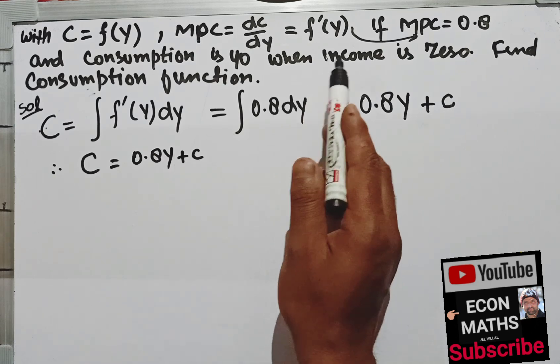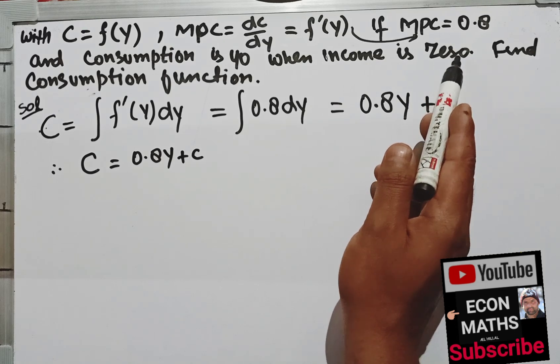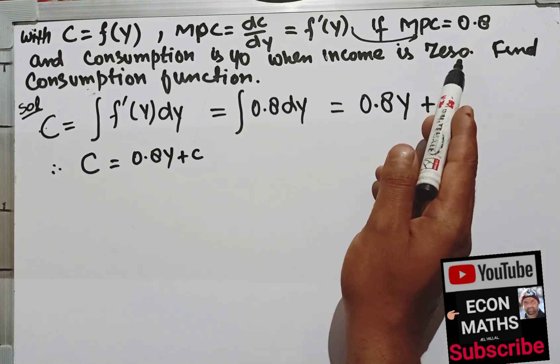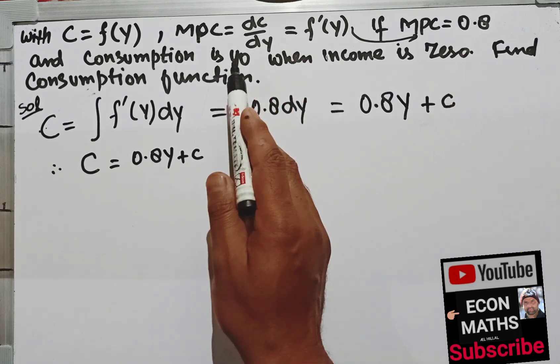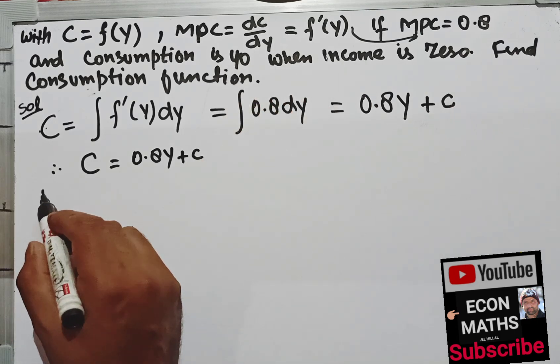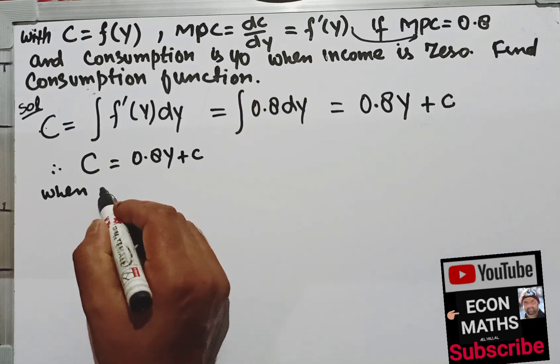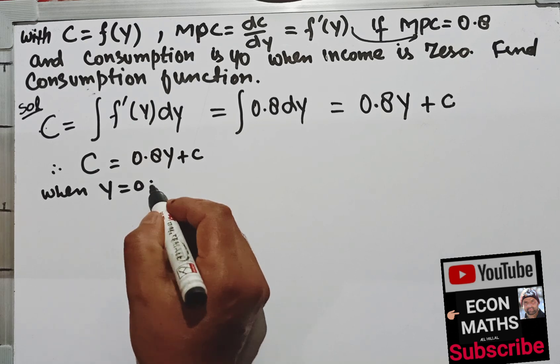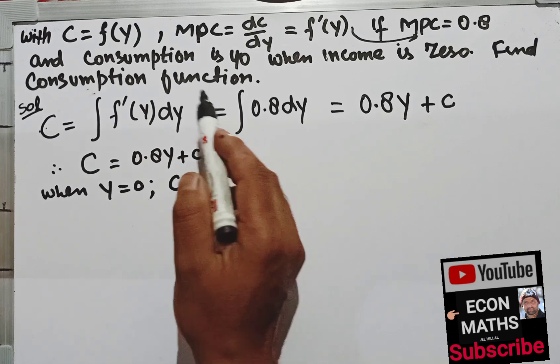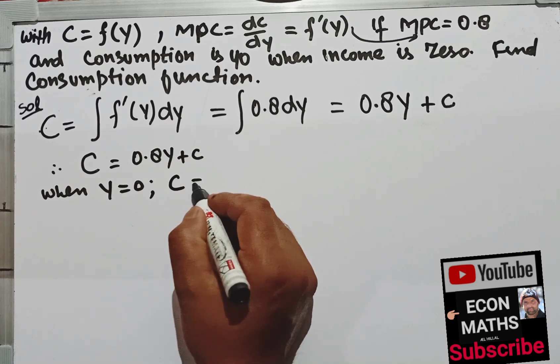Now when income is 0, consumption is given as 40. Therefore when y is equal to 0, then c is given as... the consumption is 40.